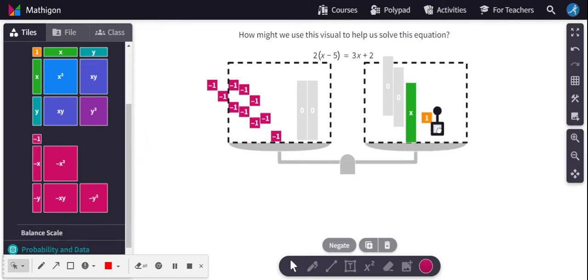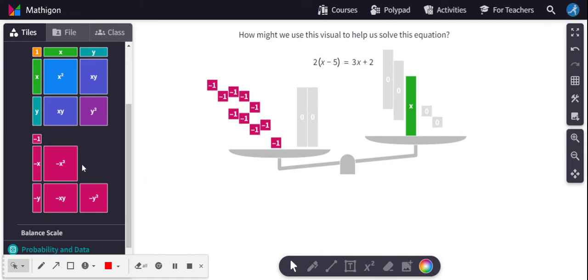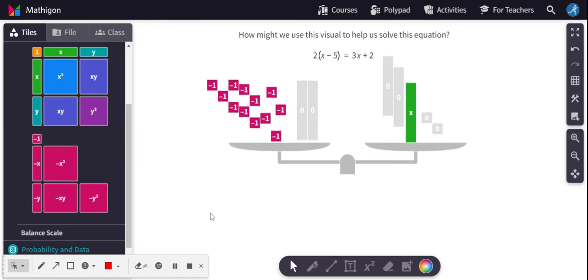I'm going to bring in two negative unit tiles. Now, it throws everything out of balance. What I do to one side, I must do to the other. If I bring two more negative one tiles in, it's going to balance out.